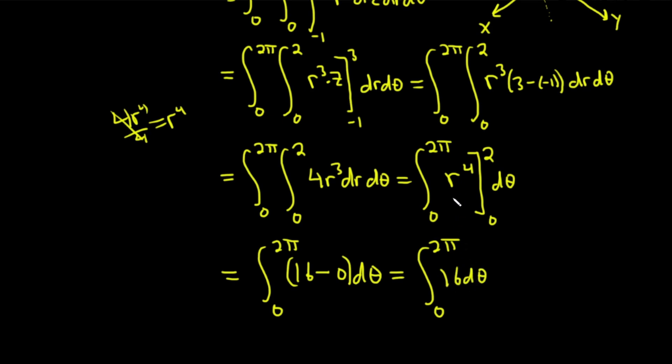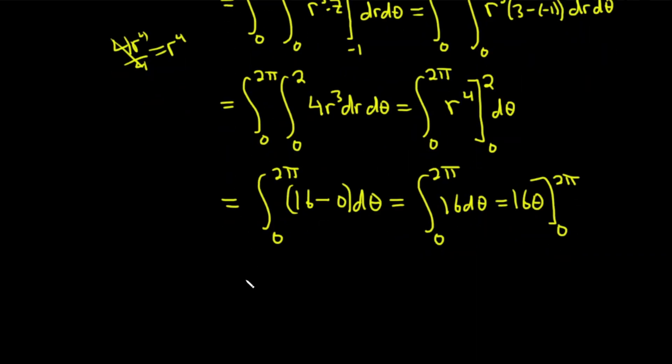And we have a constant, so when we integrate it with respect to theta, we're just going to get 16 theta. And then we're going from 0 to 2 pi. And then you plug in the 2 pi, subtract, plug in the 0, just like before. You have 16, 2 pi minus 0. And so we get 32 pi, and that would be the final answer.